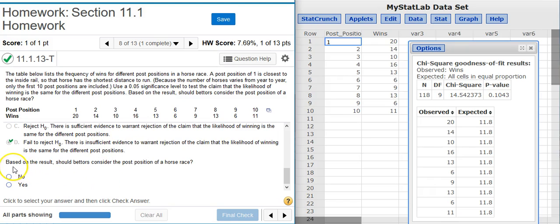And the last part of this question asks, based on the result, should betters consider the post position of a horse race? Well, what did we conclude from our hypothesis test? We failed to reject H0, which means that H0 could be true. What was H0?